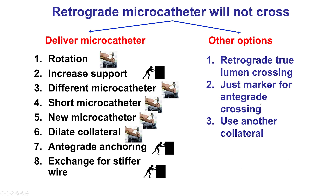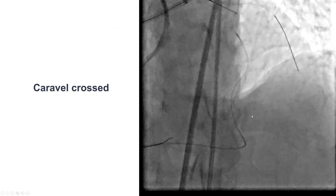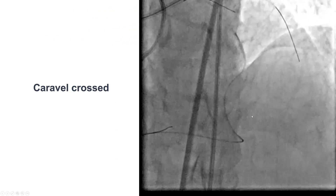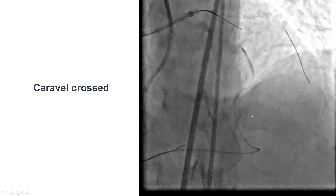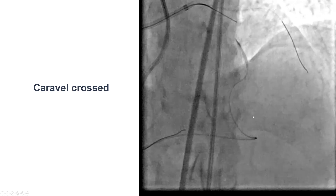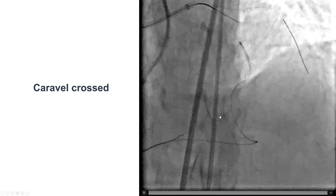If everything fails, another option is to use the retrograde wire for truelumen crossing — though quite challenging given we have a workhorse wire — use the retrograde wire as a marker for antegrade crossing, or use another collateral. In this particular case, we just changed to a different microcatheter, the Caravelle, and that microcatheter was able to successfully cross.